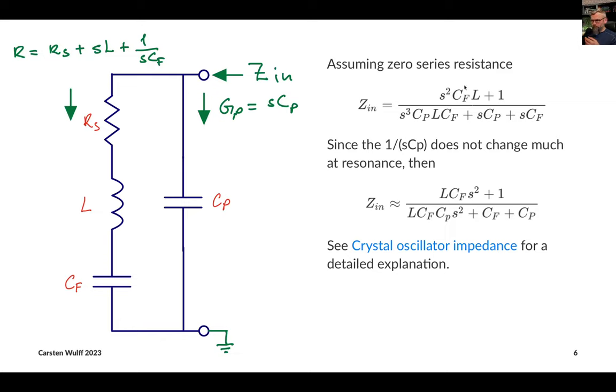We get a transfer function that looks like this. A couple of things you can observe is that there are multiple poles here. There is one at DC because of the capacitor, so the impedance goes towards infinite at low frequency. But then there will be a couple of other poles also, where we can get the resonance.